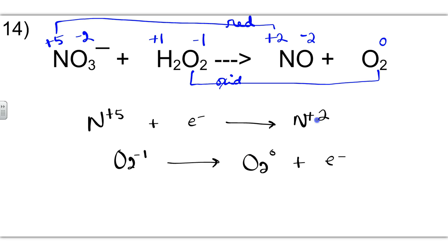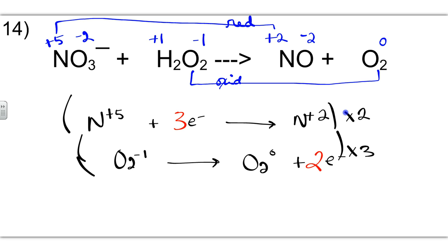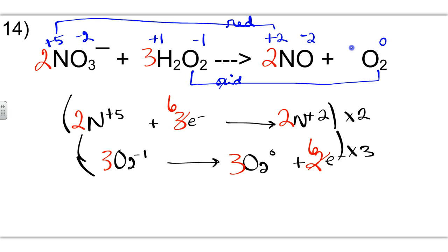We add the electrons to the left here because plus 5 is a higher oxidation state than plus 2. We add the electrons to the right here because 0 is a higher oxidation state than negative 1. From plus 5 to plus 2 is a difference of 3 electrons. From negative 1 to 0 is a difference of 1 electron for each oxygen, and 1 times 2 equals 2 electrons transferred. This will be times 2, and this will be times 3. Now we'll distribute, giving us an equal number of electrons. Placing coefficients back: a 2, a 3, a 2, and a 3.